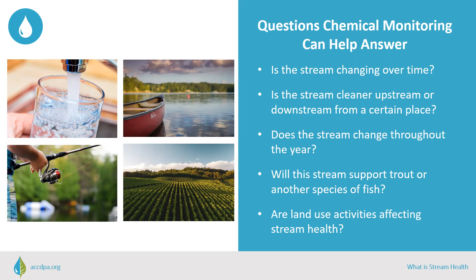Water quality experts have determined what levels of chemicals, metals, and microbes in streams are healthy for a particular use, such as drinking, recreating, irrigating, or supporting fish. These safe levels have been adopted by state and federal governments as water quality standards. As volunteers, monitoring water quality can address many questions about stream health, such as: Is the stream changing over time? Is the stream cleaner upstream or downstream of a certain place, such as a tributary? Does the stream change throughout the year? Will the stream support trout or other species of fish? And are there land use activities affecting stream health?